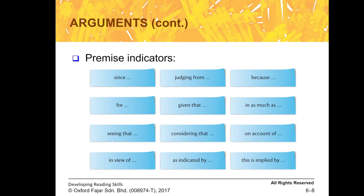Some premise indicators include: 'since,' 'seeing that,' 'in view of,' 'as indicated by,' 'considering that,' 'given that,' 'judging from,' 'because,' 'as much as,' 'on account of,' and 'this is implied by.' Whenever you find these words or phrases, you can identify that part of the text as likely being a premise.